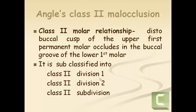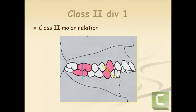Class 2 malocclusion can be subdivided into class 2 division 1, class 2 division 2, and class 2 subdivision. We can see a class 2 molar relationship where the distobuccal cusp of the maxillary first permanent molar falls in the buccal groove. You can also see a class 2 canine relationship where the distal cusp of the upper canine falls on the mesial cusp of the lower canine.